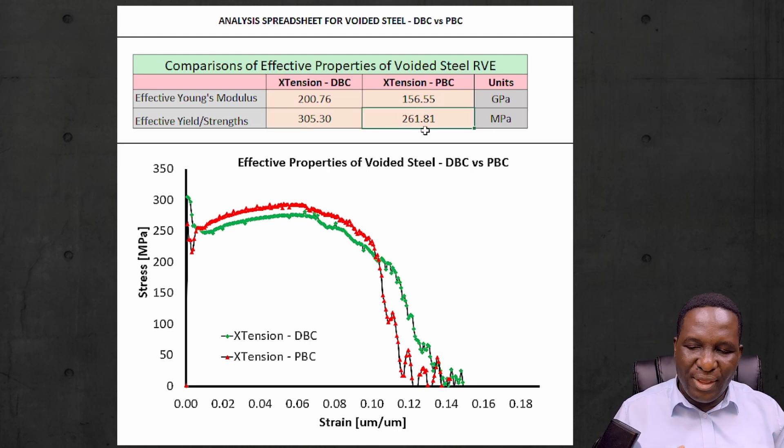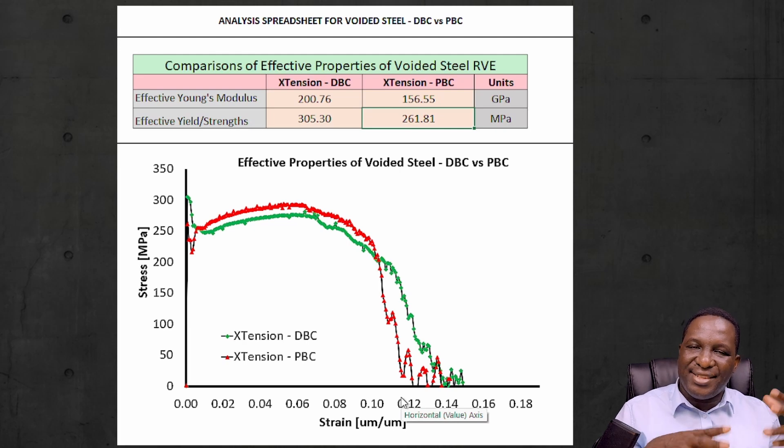The other thing you'll notice is that there's more ductile damage energy dissipation for a DBC-based system as against a periodic boundary condition-based system. But you get the same trend of behavior. The systems are dissipating energy and some kind of non-linearity in the fracture region. Everything looks as expected and it looks correct.